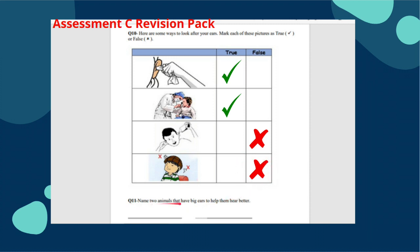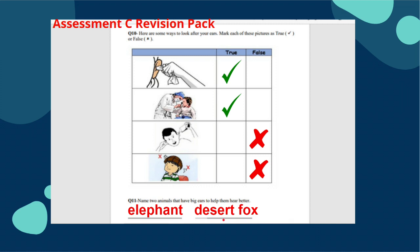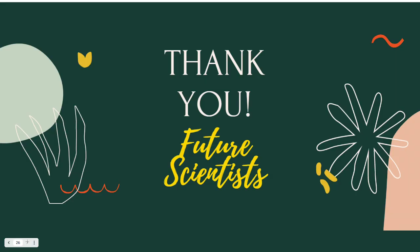Question eleven: name two animals that have big ears to help them hear better. The elephant, being the largest living land animal, has the biggest ears of any living animal. The desert fox uses its big ears to listen for sounds of prey in the sand, and the ears also help dispel body heat to keep the fox cool. You can continue to explore, discover, and share your ideas from Unit 6 Sound. Thank you and good luck!